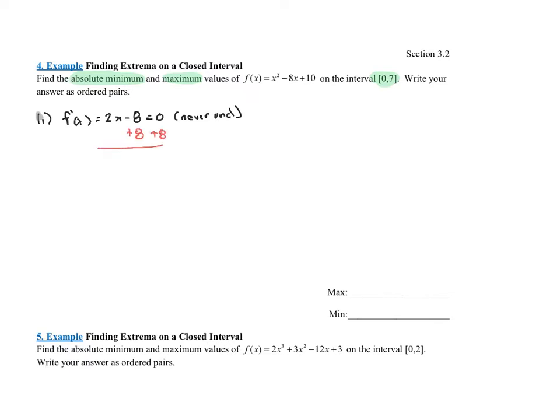Adding 8 to both sides, I end up with 2x equals 8. Dividing both sides by 2, I end up with x equals 4. This is in the domain of my original function, so this is my critical value. I do nothing else with the derivative of this function. I don't create a number line. I don't do anything else remotely related to what I've been doing the rest of the time.